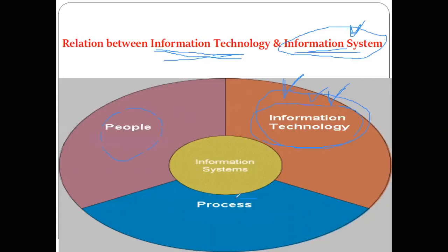Apart from information technology as a component of information system, there are other components as well — people, various kinds of procedures and processes utilized in the business. So we can say information technology is nothing but the bridge between the information system and the user of that information system. If information technology is not available, can we utilize the information system?